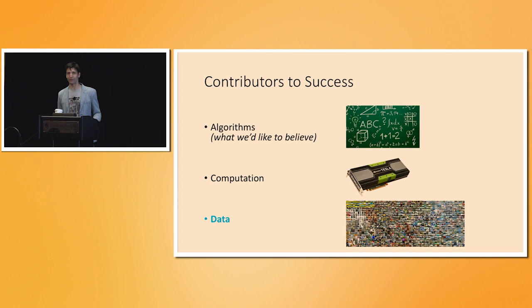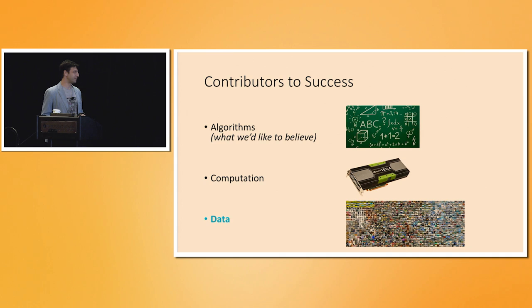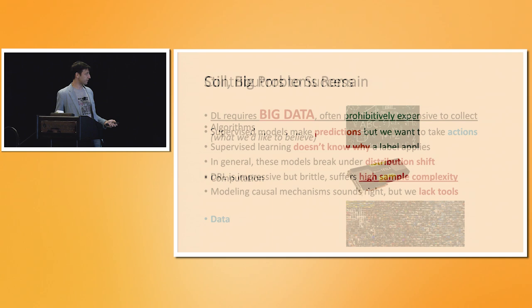The contributors to success — as modelers and researchers, we want to believe we are responsible. But there's a reasonable perspective that says the core ideas have been in place since the late 80s and certainly by the late 90s: convolutional neural networks, recurrent neural networks, and the LSTM was already invented in the mid-1990s. The key drivers of success are more computation and more data — going from 2,000 images to 1 million images.